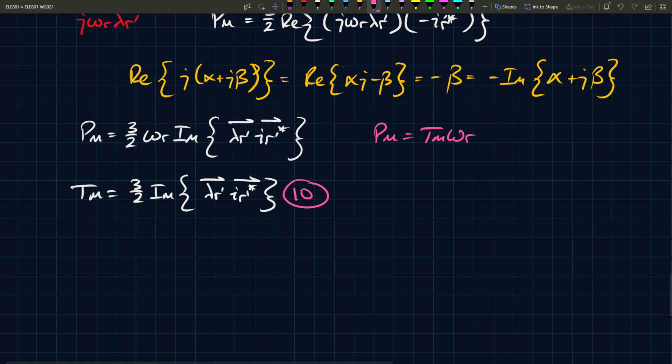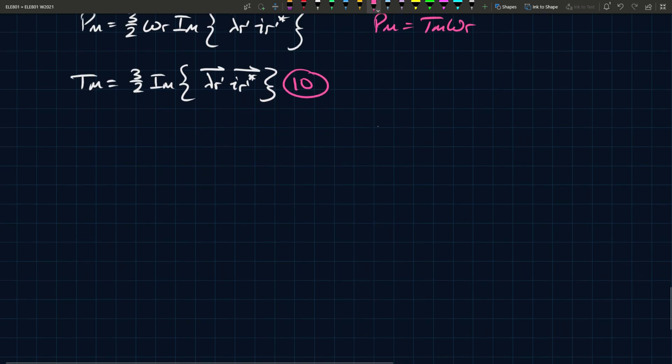So, what else can we do? We can simplify this a little bit more. We also know that lambda R prime is equal to LM IS plus LR IR prime, and this is an equation from a previous video. So in the previous video, we defined this, we made the change of variables to arrive at this equation.